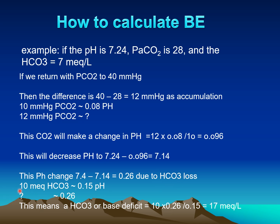The rule is: 10 milliequivalents of sodium bicarbonate is associated with a change in pH of 0.1. For a pH change of 0.26, applying this formula gives us 17 milliequivalents per liter — this is the base deficit.